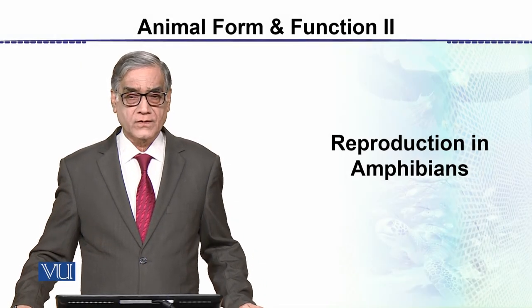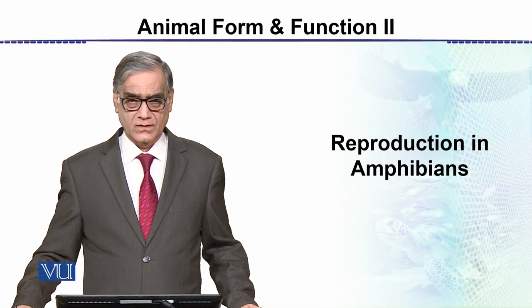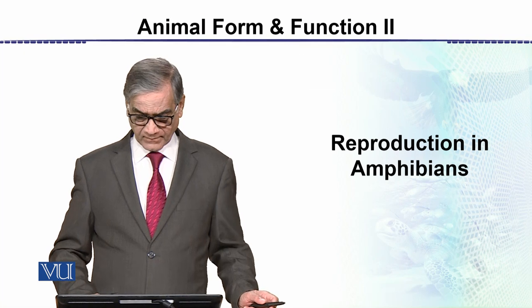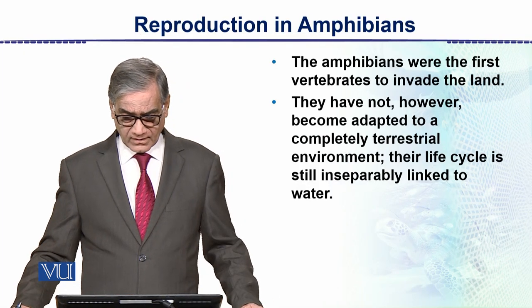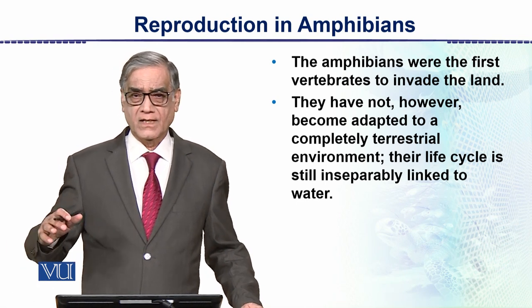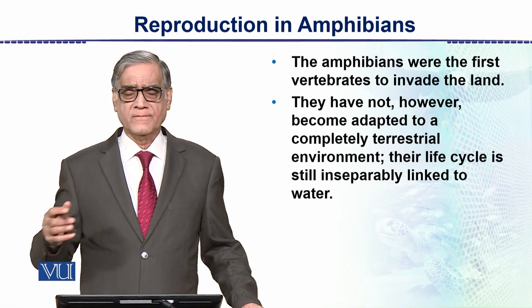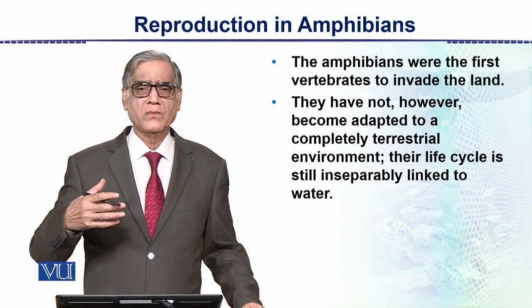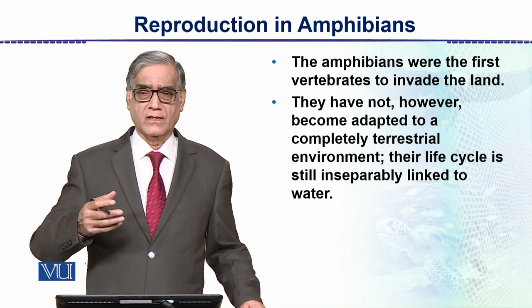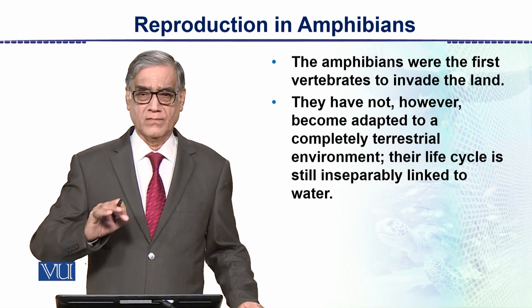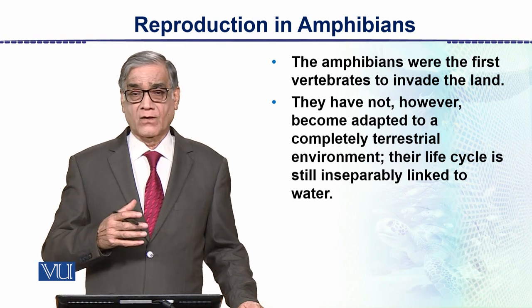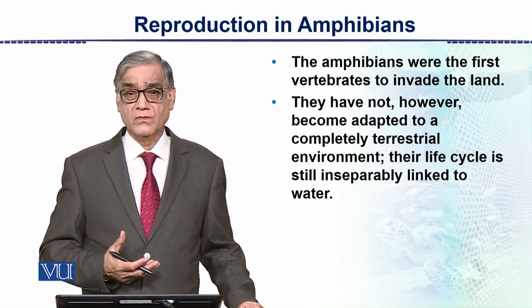The next topic is reproduction in amphibians. This is also a reproductive strategy of vertebrates. The amphibians were the first vertebrates to invade the land — they sit between fishes and reptiles. Water-dwelling animals came onto land and evolutionarily developed adaptations for terrestrial life.